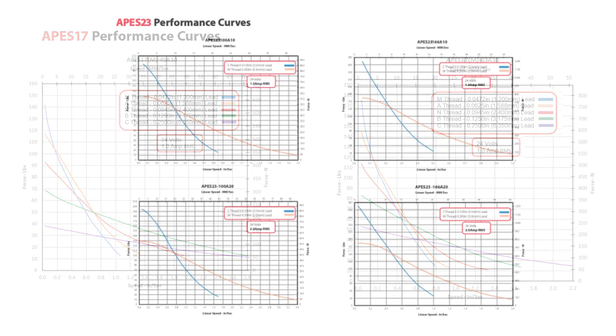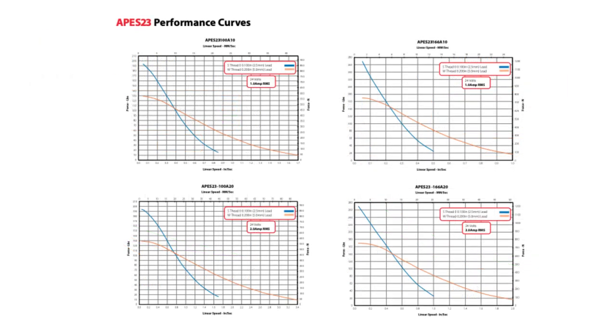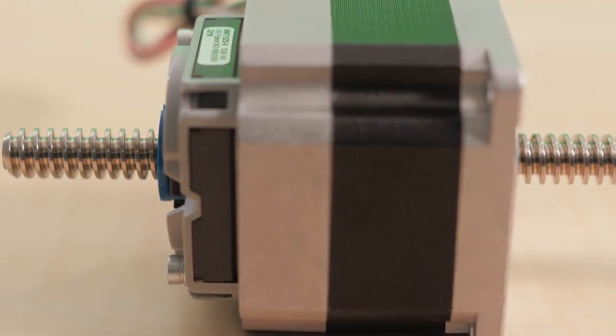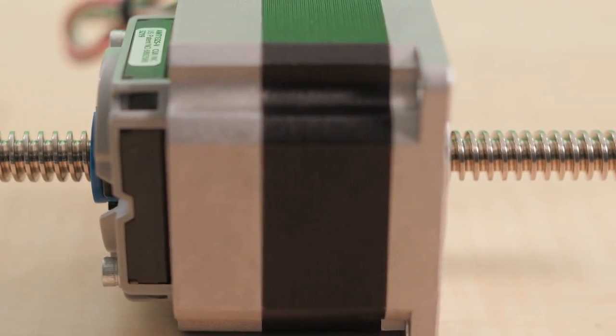These hybrid stepper-based linear actuators can provide OEMs the precision, performance, and reliability needed for a wide variety of motion control positioning applications. These can range from medical and laboratory equipment to industrial machinery and beyond.